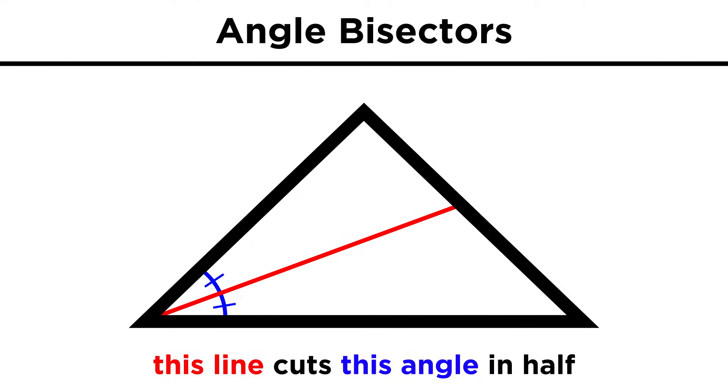Besides perpendicular bisectors, we can also describe angle bisectors, which are lines that cut an angle in half. Any point on this angle bisector will be equidistant from the two other lines.